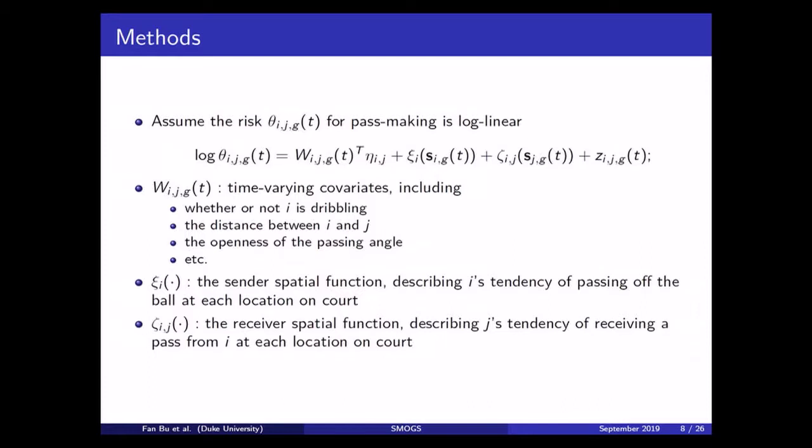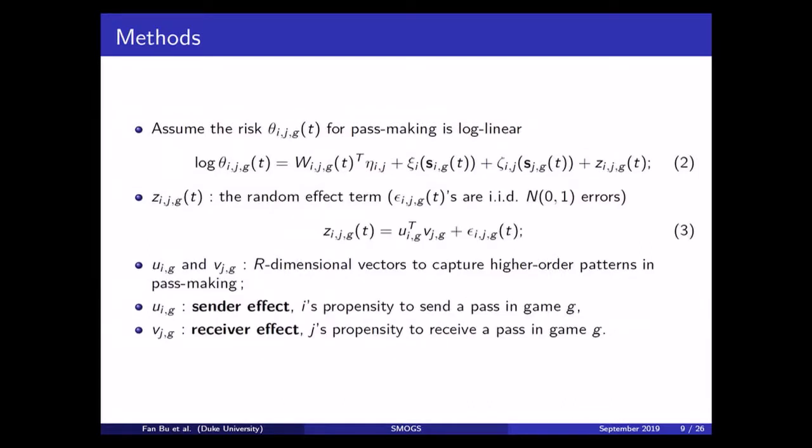And it also depends on some spatial functions. So, first of all, the sender spatial function, which describes the ball carrier i's tendency of passing off the ball depending on his location on the court. And second of all, the receiver spatial function, which describes the teammate j's tendency of receiving the pass from the ball carrier i, which depends on the teammate j's location on the court.